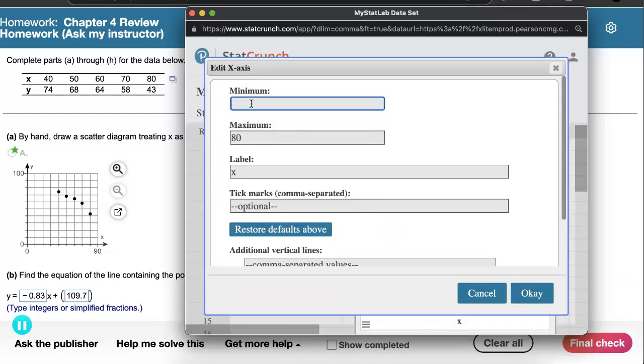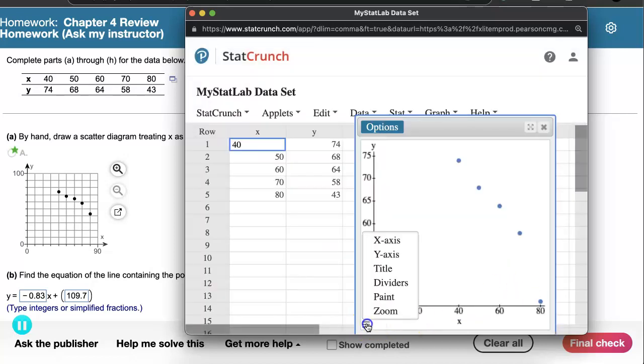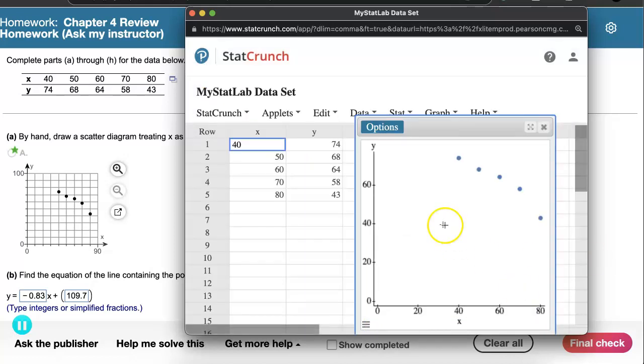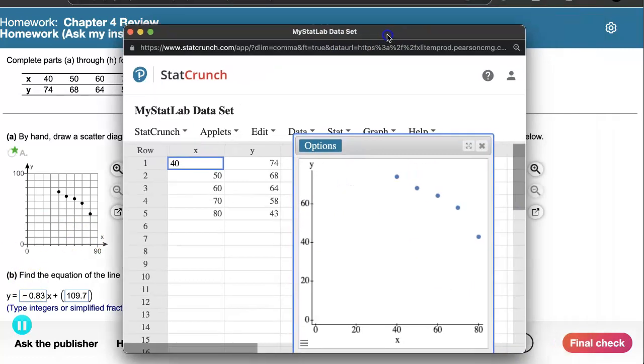We can go ahead and set the minimum here at zero and click OK, and we could do the same thing for the Y axis, set its minimum at zero, and then click OK. Now, I did not set the maximum value to be the same, but that might be enough to make a better match.